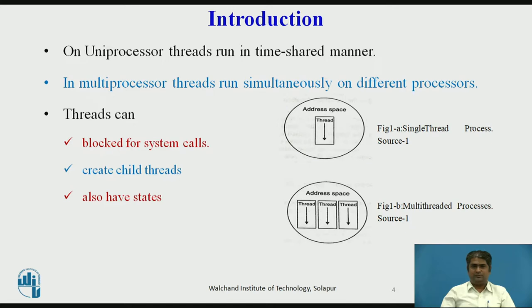As shown in figures A and B, like traditional processes, a thread can create child threads, can block waiting for system calls to complete, and can change states during the course of execution. At a particular instance of time, a thread can be in any one of several states: running, blocked, ready, or terminated. Due to these similarities, threads are often viewed as mini processes, more specifically referred to as lightweight processes, while traditional processes are referred to as heavyweight processes.